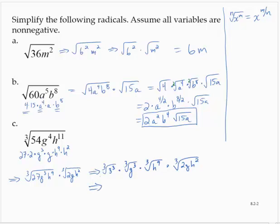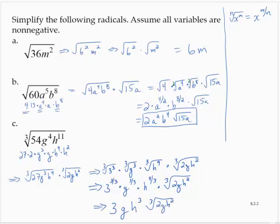Using that rule for exponents and radicals, this would be 3 raised to the 3 over 3 power, times g raised to the 3 over 3 power, times h raised to the 9 over 3 power, and leave that last radical alone. So that gives me 3 to the first power, which is 3, g to the first power, which is g, h to the third, and then a cube root of 2g h squared.